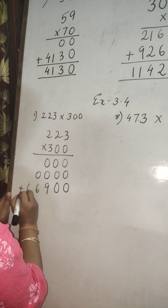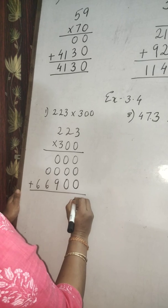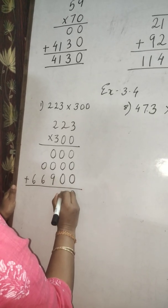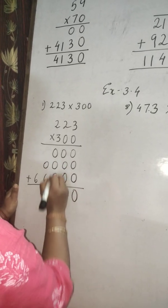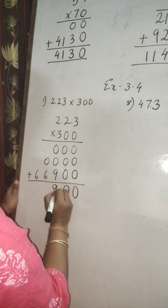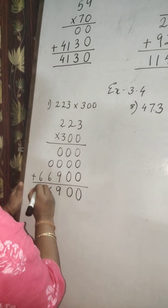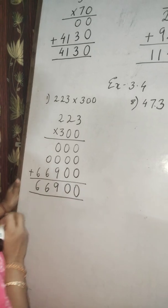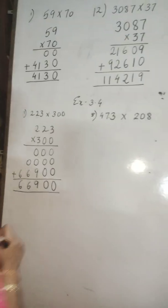Now add. Give the plus sign: 0 plus 0 is 0, 0 plus 0 is 0, 0 plus 9 is 9, 0 plus 6 is 6, and 6. So this is the answer: 69,900.